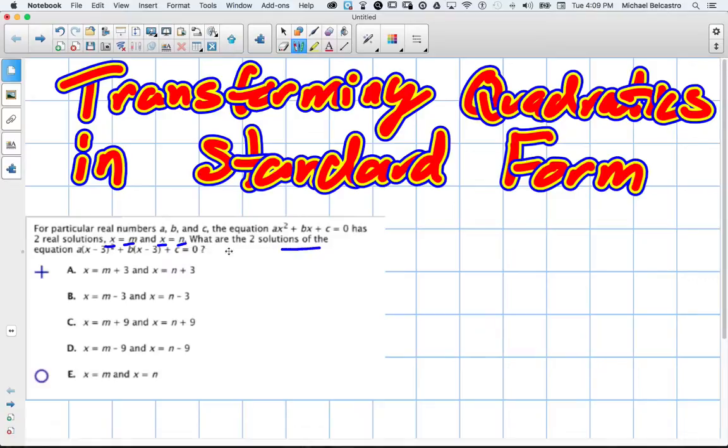What are the two solutions of the equation A, and then in brackets X minus 3 squared, plus B times X minus 3 plus C equals 0? So what they're asking is this standard form of this equation has been transformed to this equation.